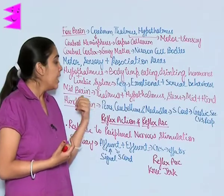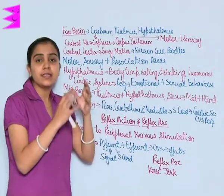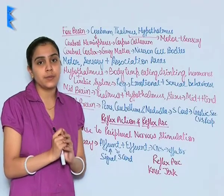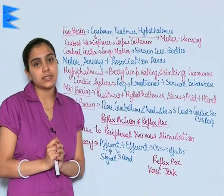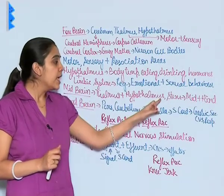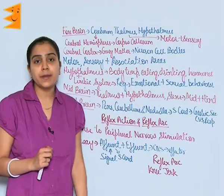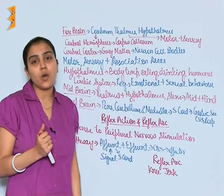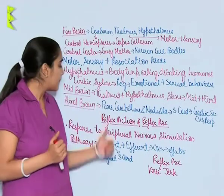The midbrain is the part of the brain present between the thalamus and hypothalamus. The midbrain together with the hindbrain forms the brain stem.